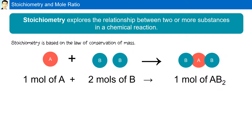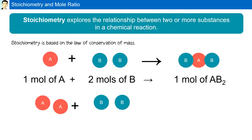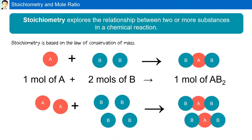Now suppose we have two moles of A. How many moles of B would be required to completely react with that two moles of A? We can see two moles of B is required for every single mole of A. Therefore, we would need not just two, but four moles of B to react with two moles of A. Thereby, we will also produce not one, but two moles of AB2.